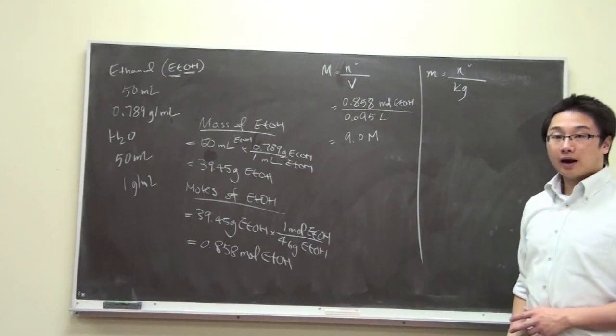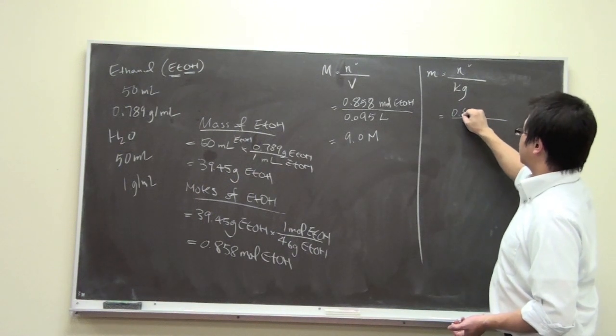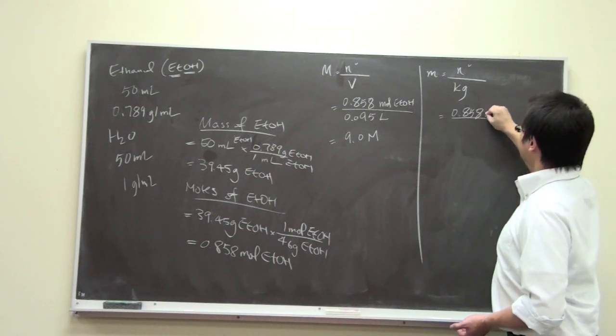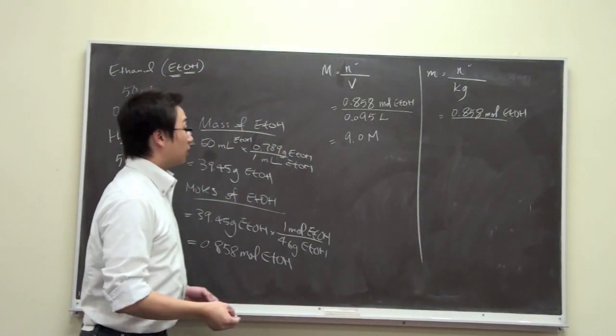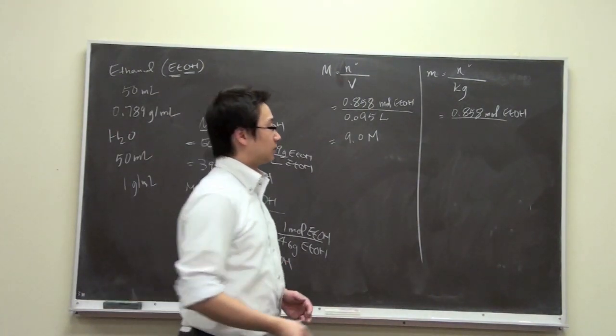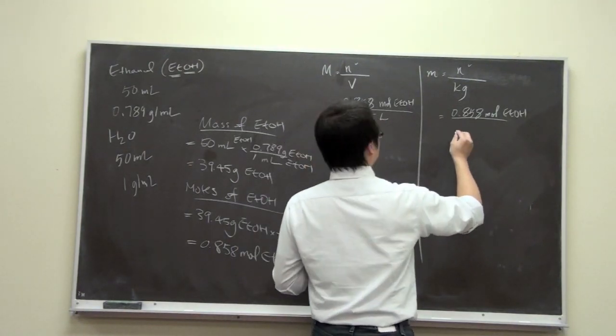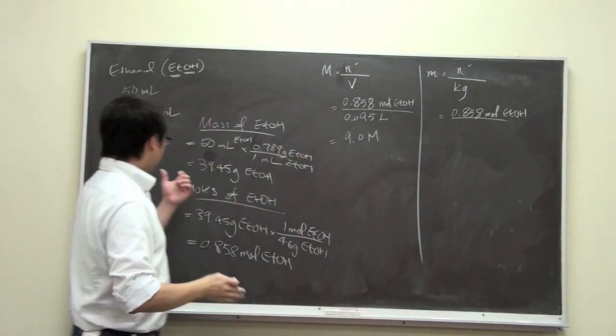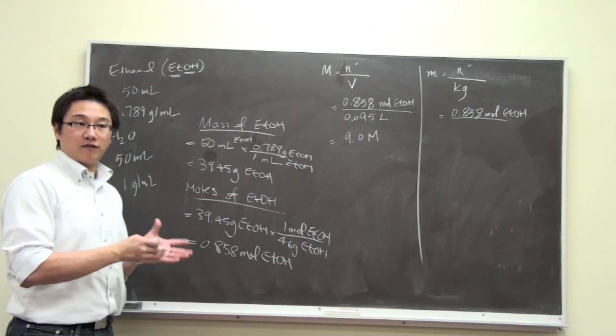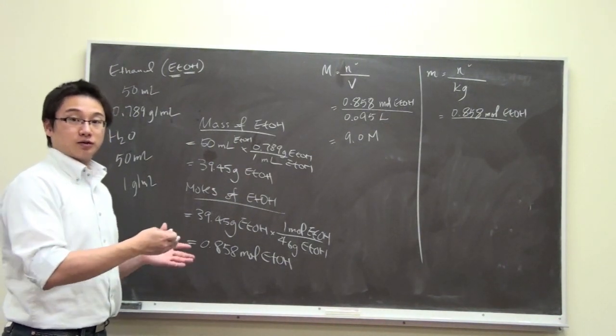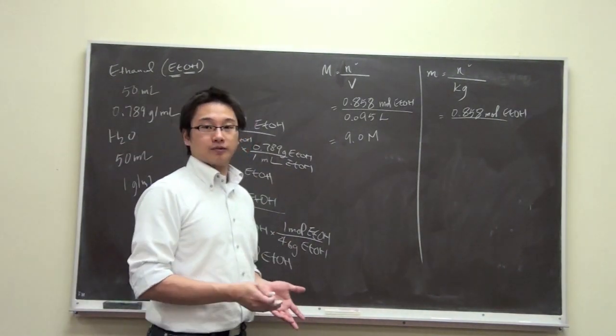And how about the molality? Now the molality, we're going to use the same number because we are doing the same solution. And for the kilograms of the solvent, the solvent here is our water. And water in kilograms is going to be... so we are given 50 ml of the water, and it is 1 gram per ml, meaning that for every milliliter of the water, its mass is 1 gram. So we have 50 grams of water.